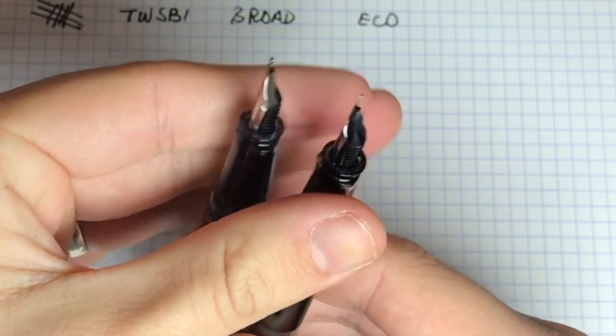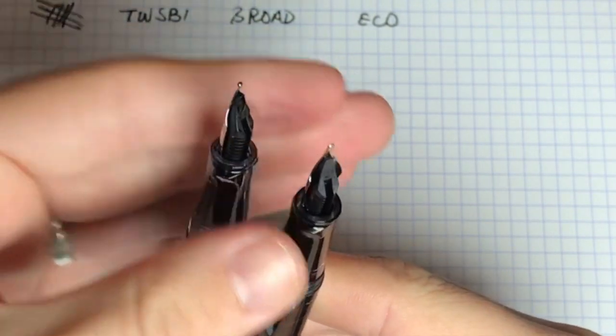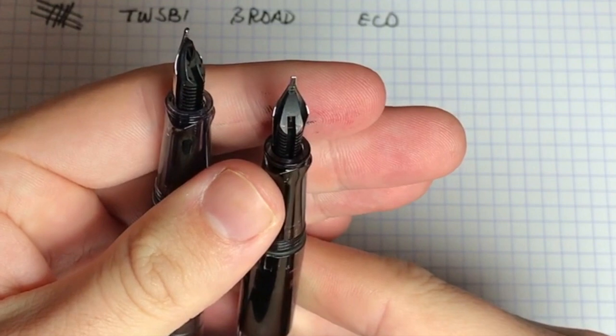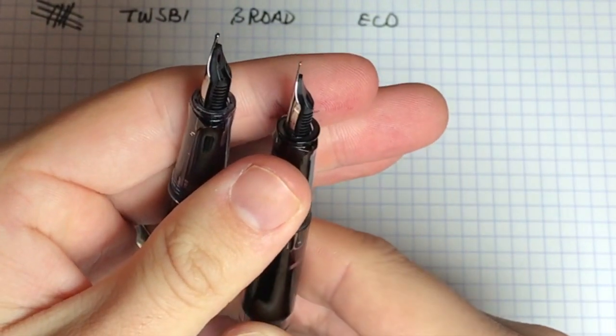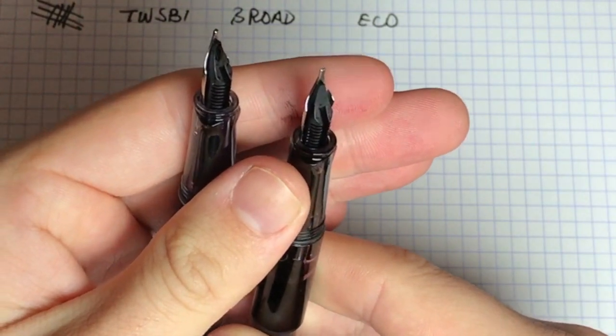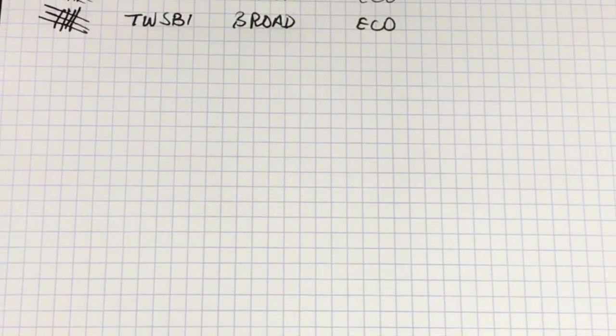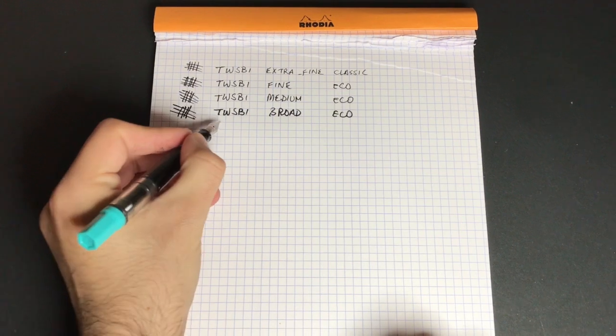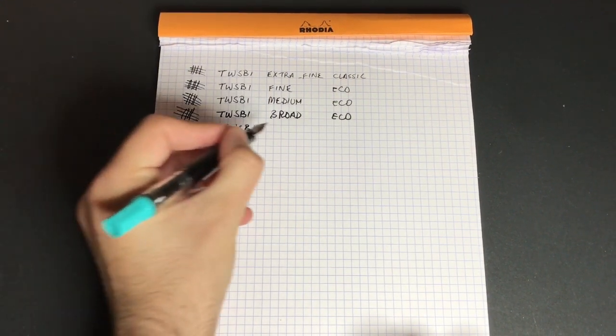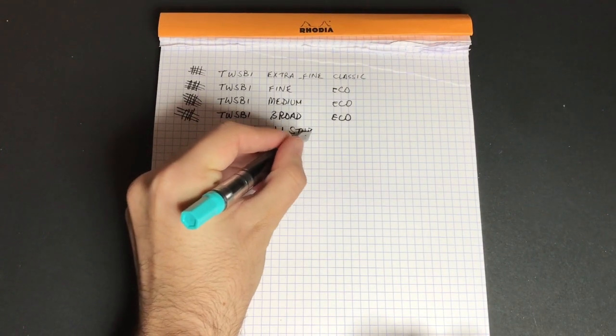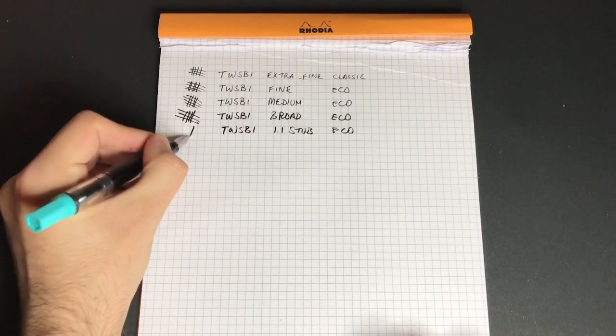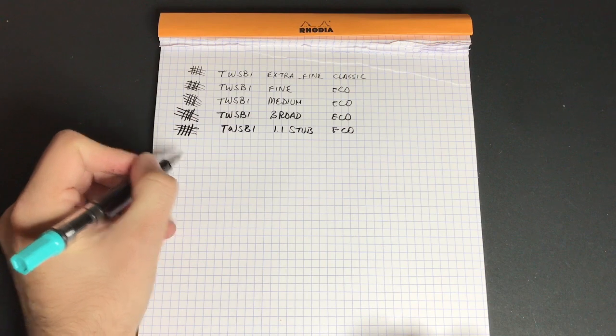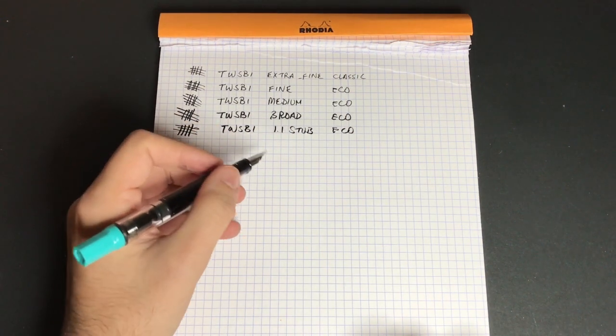So, whereas the broad there has a nice sort of ball of tipping, the stub nib, and it's a stub not an italic because it's got sort of rounded corners, is flat and doesn't have any tipping to allow for that sort of rounder line. So what you get is you do get a more flat sort of line with some in-built variation. So here you can see very nice thick downstrokes and nice narrow side strokes. This is once again a really lovely stub nib. It's one of my favourite stub nibs.